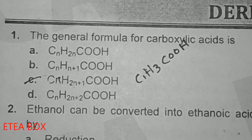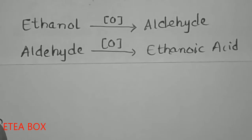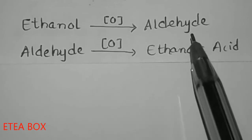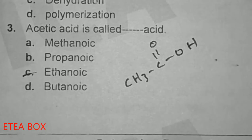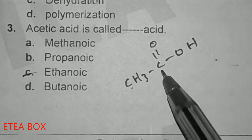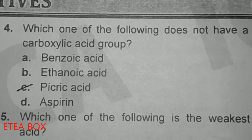Ethanol can be converted into ethanoic acid by oxidation. When we oxidize ethanol we get aldehyde, and when aldehyde is further oxidized we get ethanoic acid. This aldehyde will be ethanal, also called acetaldehyde. Acetic acid is also called ethanoic acid — it contains two carbons, so we get ethanoic acid. Option B is correct.